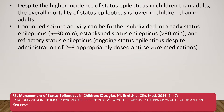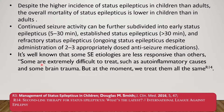Continued seizure activity can be divided into early status (5–30 minutes), established status (more than 30 minutes), and refractory status epilepticus, when ongoing status epilepticus continues despite administration of two to three appropriately dosed anti-seizure medications. It is well known that some status epilepticus etiologies are less responsive than others — some extremely difficult to treat, such as autoimmune encephalitis or brain trauma. But at the moment, we treat them all with the same protocol.